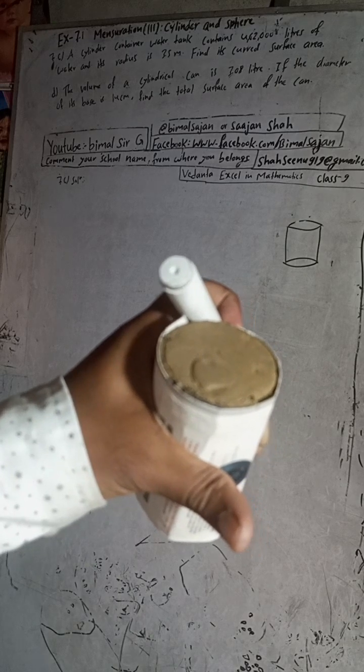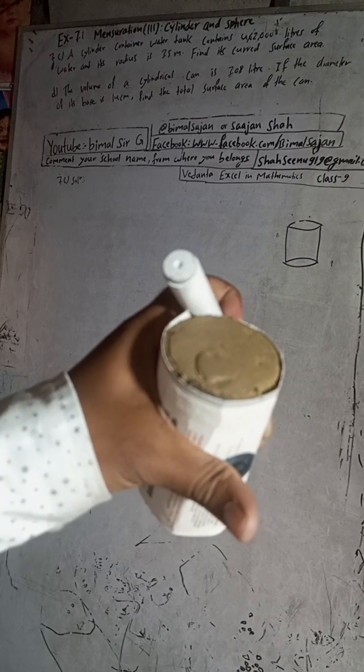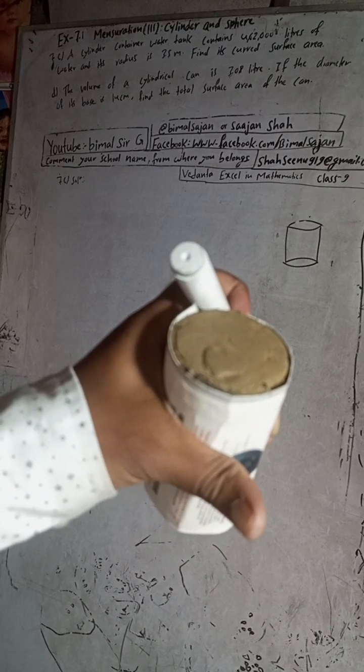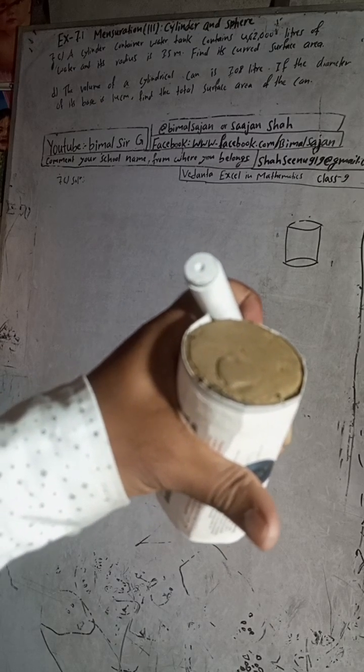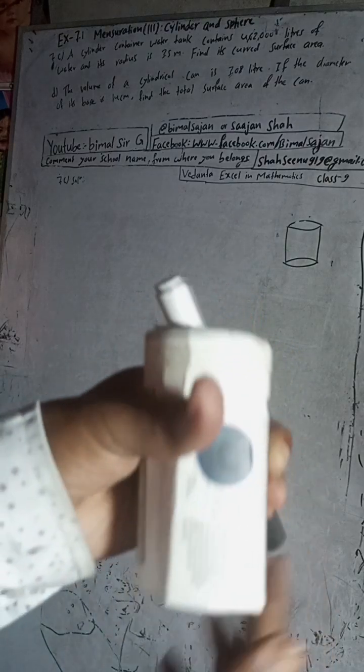The question 7c: A cylindrical container water tank contains 4 lakh 62,000 liters of water and its radius is 3.5 meters. Find its curved surface area. So the cylindrical container is this shape, like this shape.